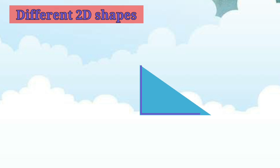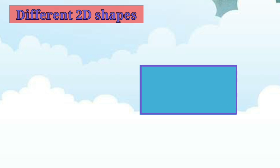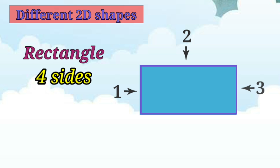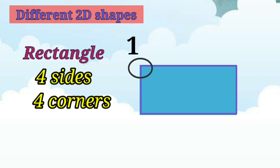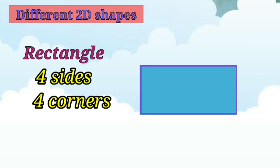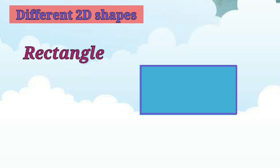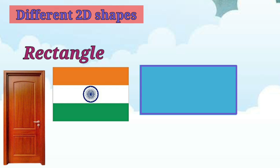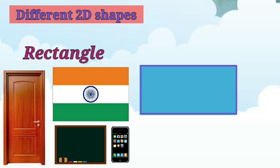Now, what shape is this? It is a rectangle. A rectangle also has 4 sides — 1, 2, 3, 4 — and it has 4 corners — 1, 2, 3, 4. In a rectangle, opposite sides are of equal length. Examples of rectangles are door, cornflake box, blackboard, and mobile phone.